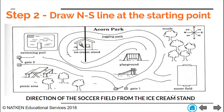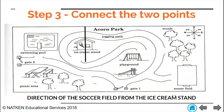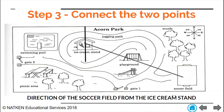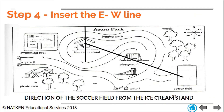Step three: we are going to connect the two points. Remember from our question we have the soccer field and the ice cream stand. Do you see the soccer field on the map? Here it is — this is our soccer field. So we are going to connect those two points. There, we have connected our points, completing step three. Next, step four, we are going to insert the east-west line right at the ice cream stand just the same. There we have it — that is our east-west line.